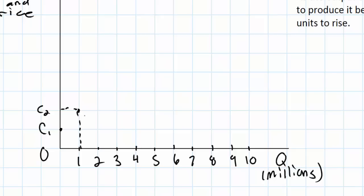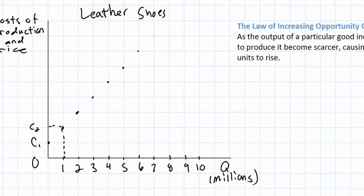The reason costs are low as leather shoe production begins is because the resources needed to produce leather shoes are very abundant. As we learned in our introductory unit, price is a reflection of relative scarcity. If resources are relatively unscarce or abundant, then the price of those resources is relatively low. What will happen, however, as the production of leather shoes increases from one million to two million, two million to three million, three million to four million, six million, and so on — it would not be surprising if the costs of producing additional leather shoes were to increase.